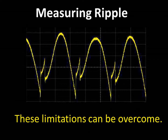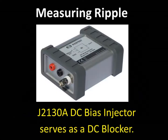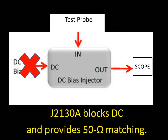Fortunately, there are effective solutions to the problems described here. Let's start with one that improves the time domain measurement. A very simple solution is to use a DC blocker, such as the Picotest J2130A, to allow the scope to remain DC coupled, while allowing high sensitivity and a good match to a 50 ohm cable, so that we have no loss in sensitivity due to impedance mismatch between the scope and the cable.